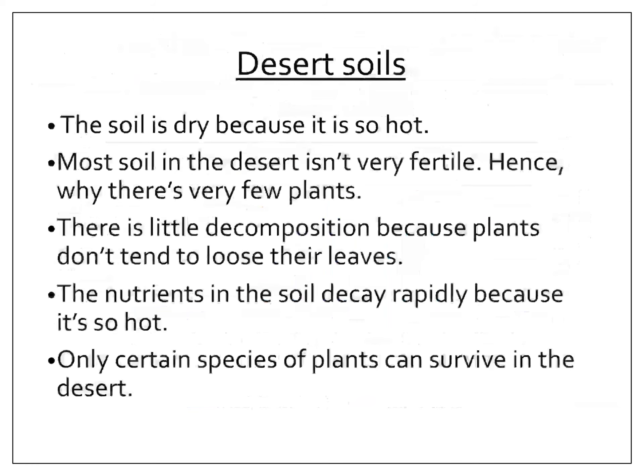Here are five quick facts to take away: deserts receive less than 250 millimetres of rainfall per year; the highest temperature in the Tar Desert is 34 degrees; the annual rainfall in the Tar Desert is 352 millimetres; the soil isn't very fertile and nutrients decay rapidly because the temperature is so hot. I really hope you've enjoyed today's geography stream — see you again next time for more.